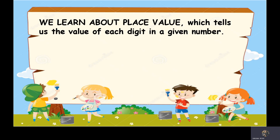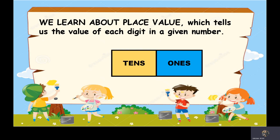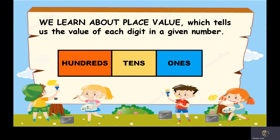If you remember, we also learned about place value. Place value tells us the value of each digit in a given number, and they are ones, tens, and hundreds. So if we have a three-digit number, there are three place values starting from ones, tens, and hundreds.